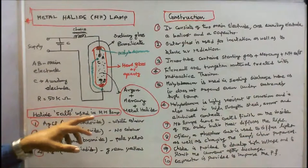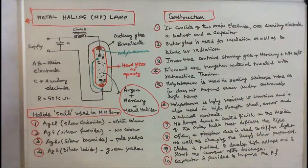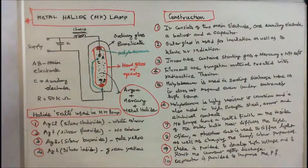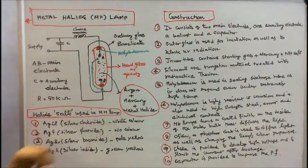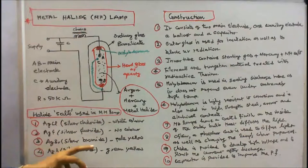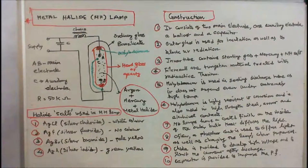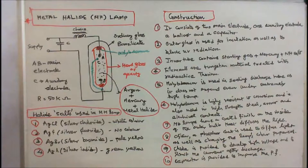Halide salts used in metal halide lamp: Number 1, silver chloride (white color); silver fluoride (no color); silver bromide (pale yellow); silver iodide (green yellow). So this is a constructional detail of a metal halide lamp.